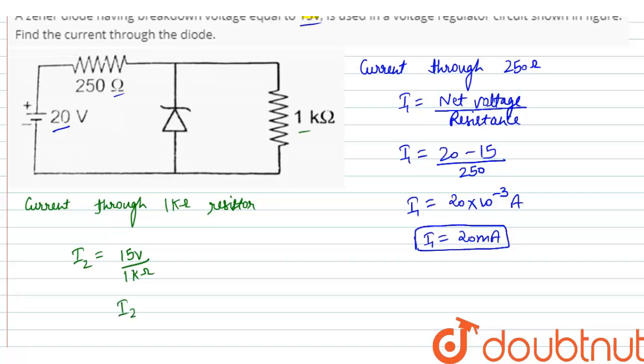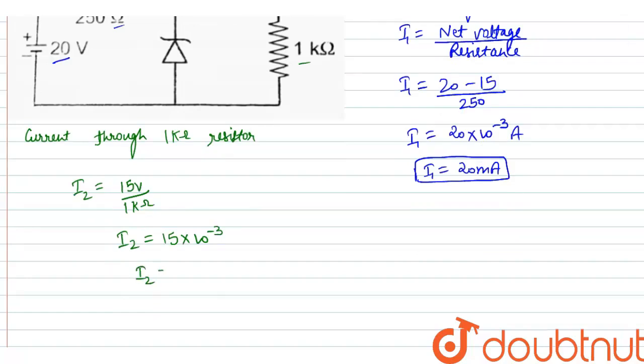So, we got I2 is equal to 15 into 10 to the power minus 3. So, we got I2 is equal to 15 milliampere.